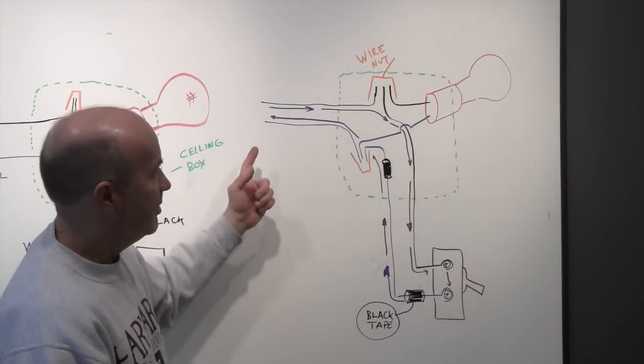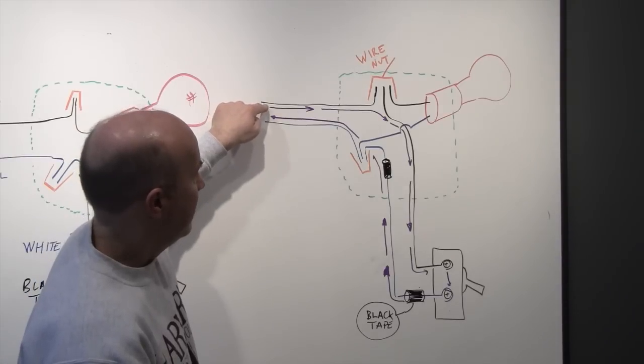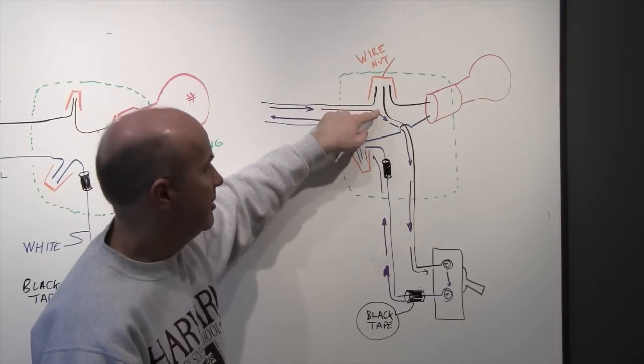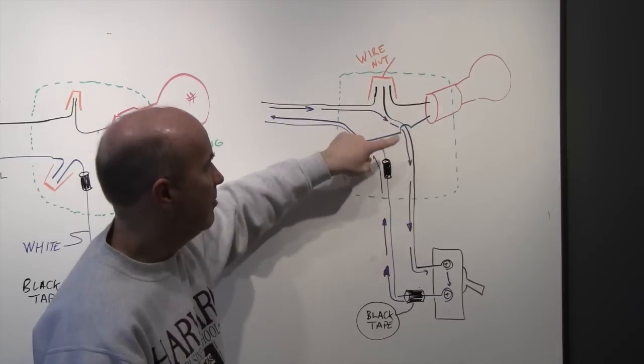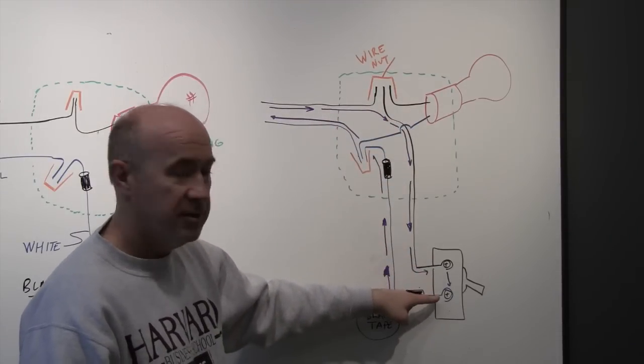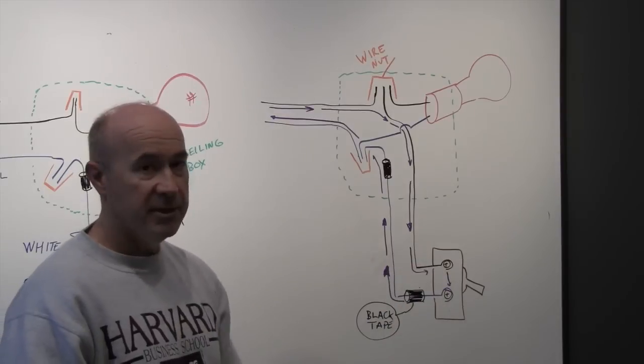So basically in this situation, I mean, it's pretty obvious to see that when you do that, the power is going to come down here. It's going to follow the path of least resistance, which is not the light bulb. You're going to go down through here, through the switch, which basically has no resistance, comes back up, and the switch is now a short.